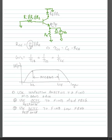And at the collector, we have RC in parallel with RL. Now we know that looking up into the emitter of a bipolar transistor, we see approximately 1 over gm. So we have 1 over gm in parallel with RE. So our RCE is equal to 1 over gm in parallel with RE.